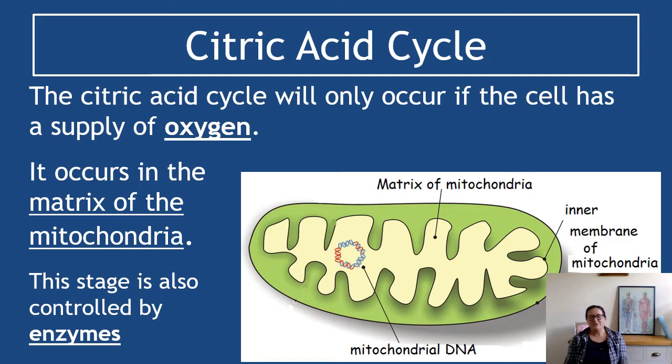The citric acid cycle is the second stage of aerobic respiration. It will only occur if the cell has a supply of oxygen. It's moving into the aerobic respiration territory now in the mitochondria. New thing: it occurs in the matrix of the mitochondria.